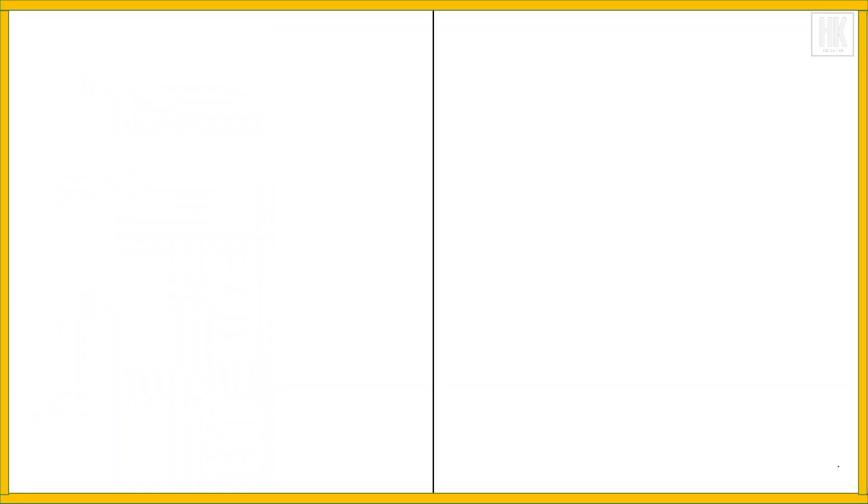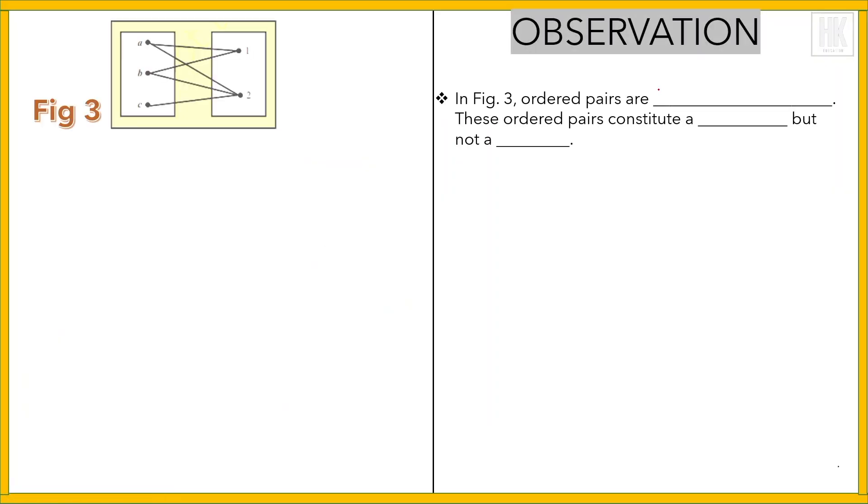Now observations: In figure three, the ordered pairs are (a,1), (a,2), now (b,1), (b,2), and last is (c,2). Now these ordered pairs constitute a relation.